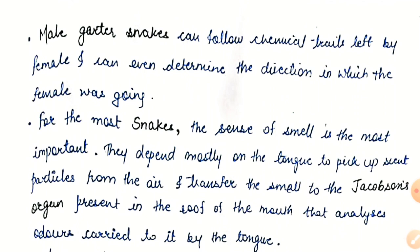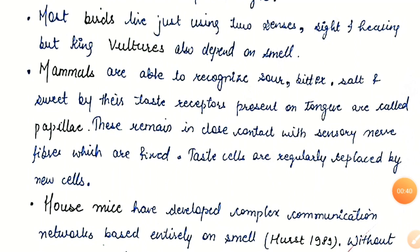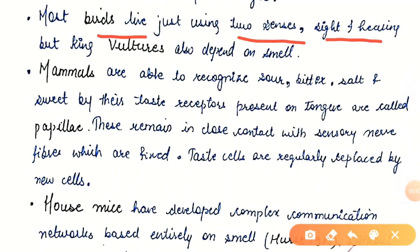These scent particles are transferred to the Jacobson's organ present in the roof of the mouth, which analyzes odors carried to it by the tongue. Snakes just taste the air, and the Jacobson's organs in the roof of the mouth analyze the odor. Most birds live using just two senses — sight and hearing — but king vultures also depend on smell; they can smell and locate their prey from great distances.